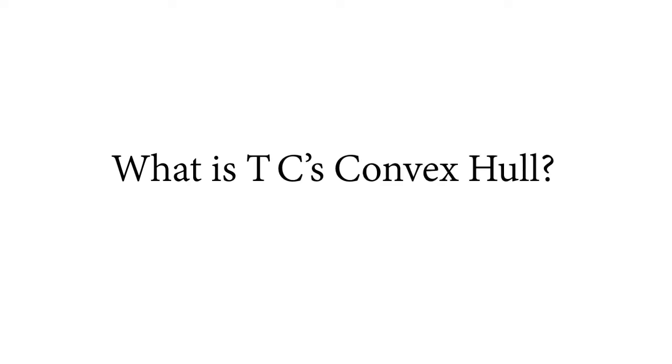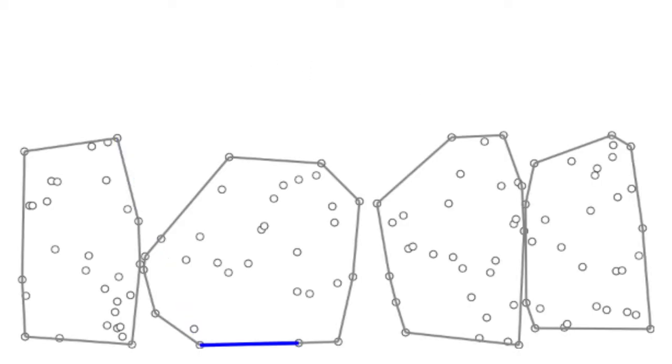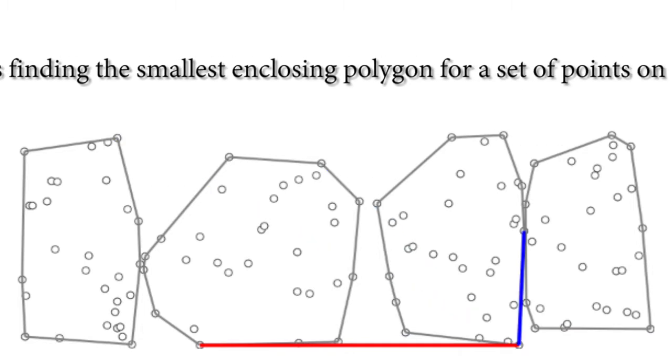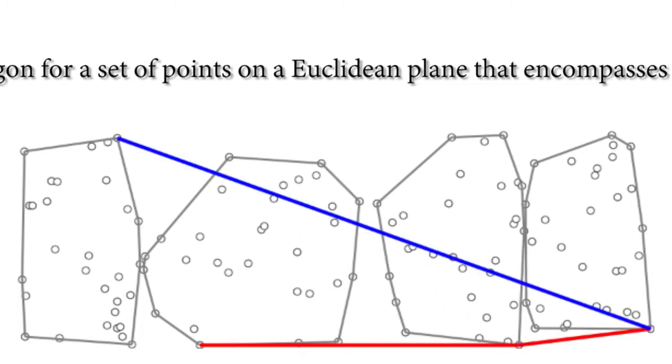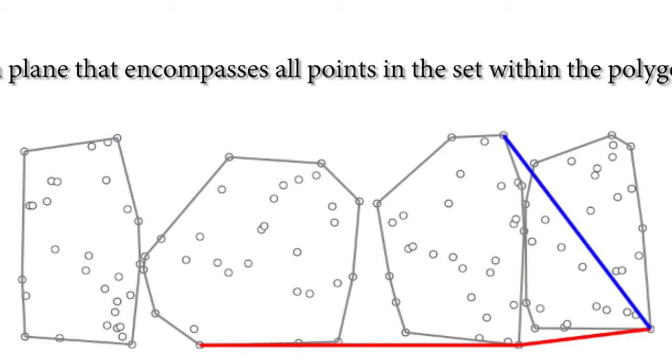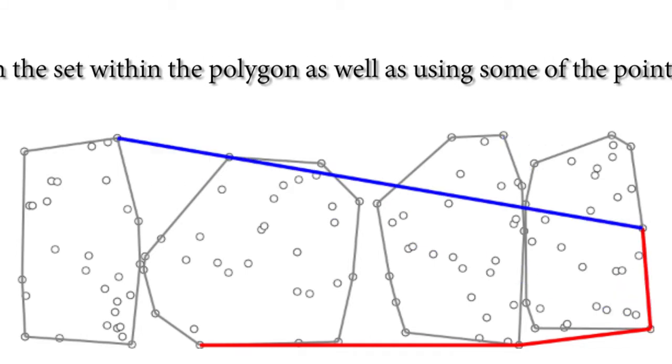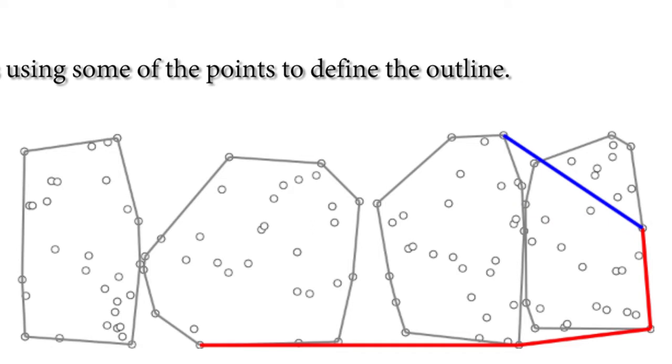So what is Timothy Chan's convex hull? The problem it tries to solve is finding the smallest enclosing polygon for a set of points on a Euclidean plane that encompasses all the points in the set within the polygon, as well as using some of the points to define the outline.